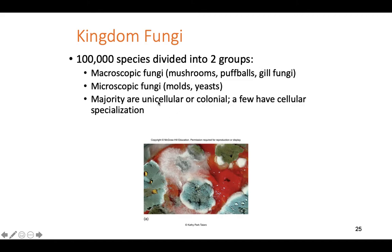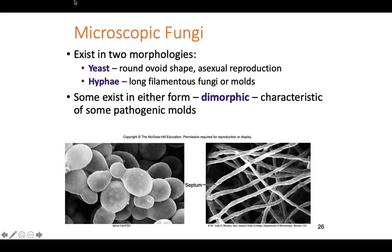The majority of fungi are unicellular — most are microscopic or colonial, meaning they live together in a group but don't need each other to survive. Some have cellular specialization forming mushrooms and reproductive structures. Microscopic fungi are found in two different morphologies: either a yeast form — small round cells — or a hyphae form, which are long spindly filamentous forms.